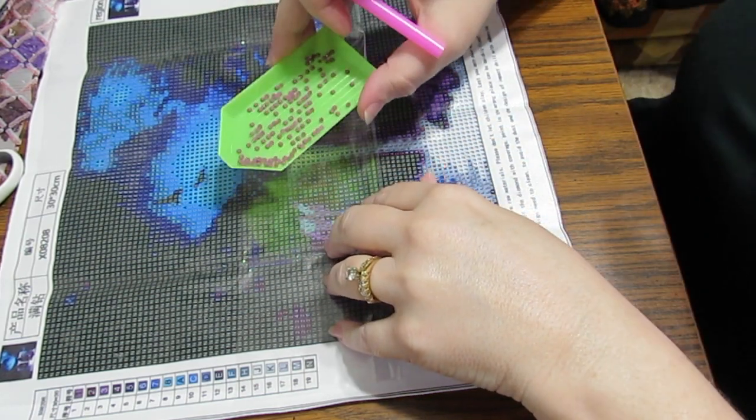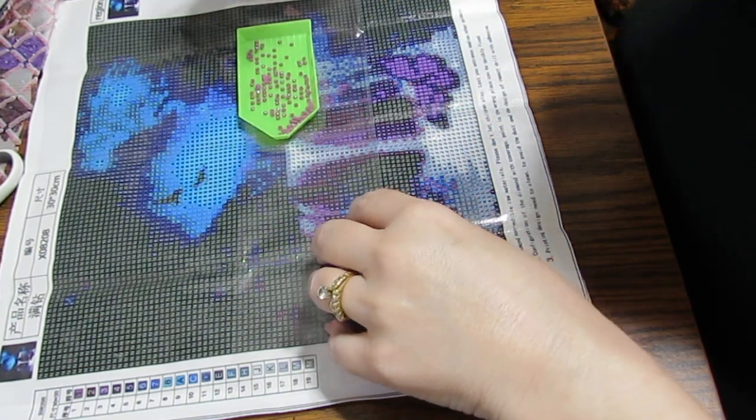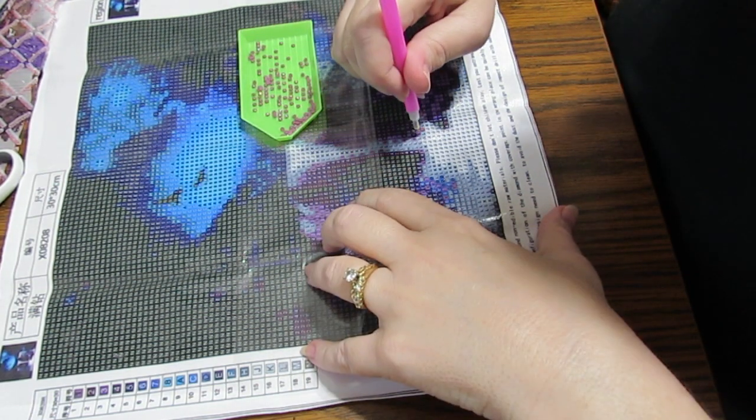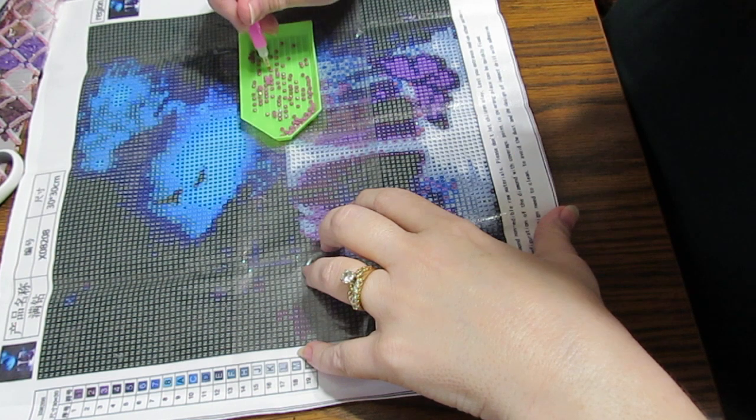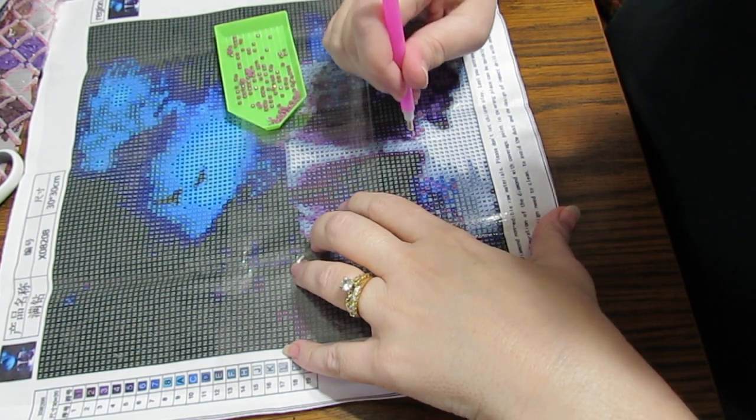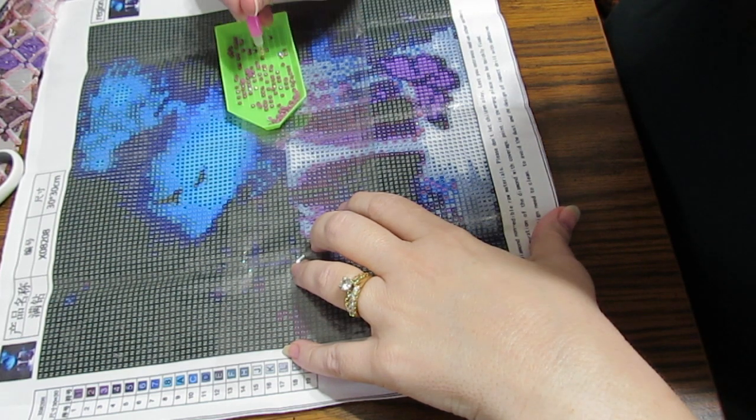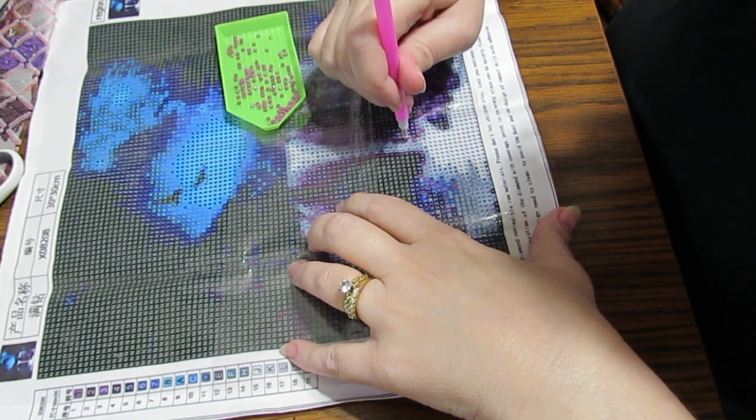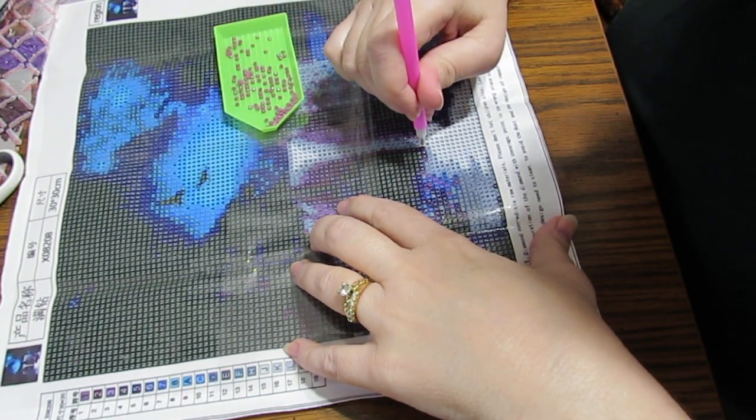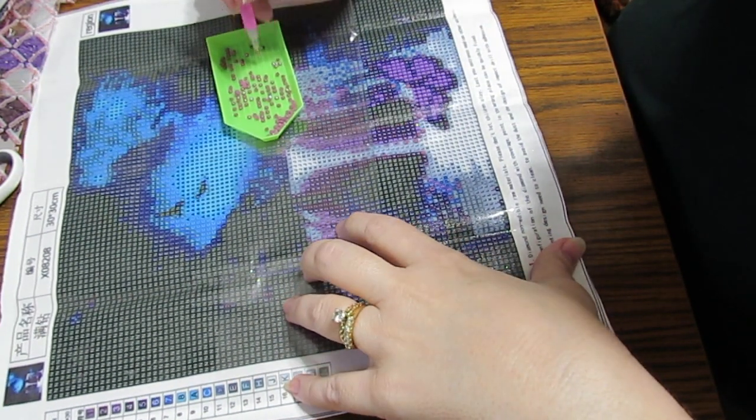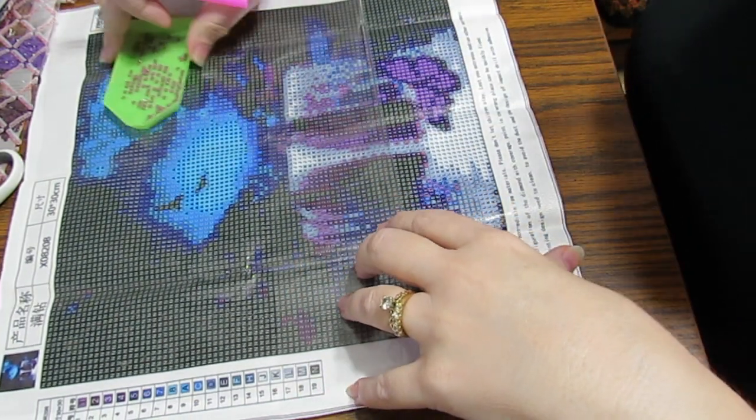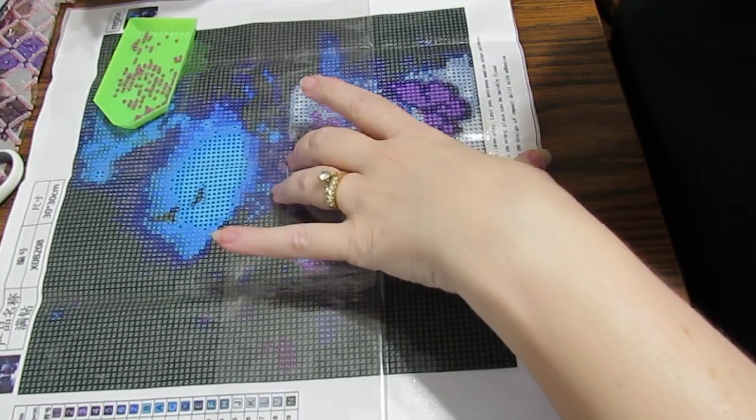So I'm just going to go through and do the number ones. That's how I did another kit I did. I went through and just picked a color. And since I had the plastic, I could see through and find them. And I just went through. And when I got done with one area, I could put the paper down and go to another thing.